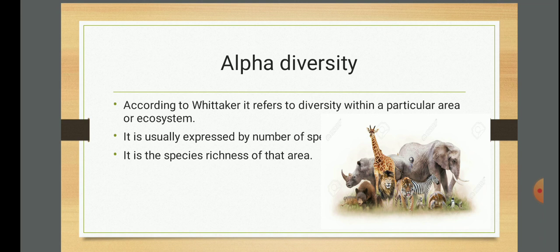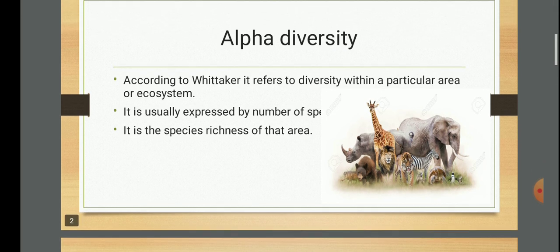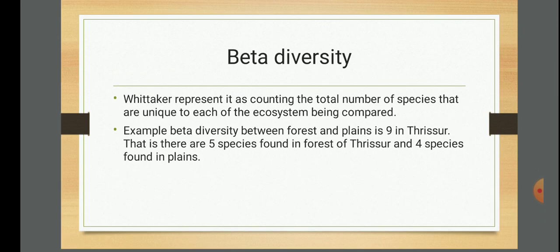Now let's go for a different type of diversity. Since this is alpha, the next one should be beta - like the alphabets. The beta diversity, as Whittaker represents it, is counting the total number of species that are unique to each of the ecosystems being compared. So the total number of species is needed, and the peculiarity is that they are unique to each ecosystem being compared. So beta diversity is a comparison.